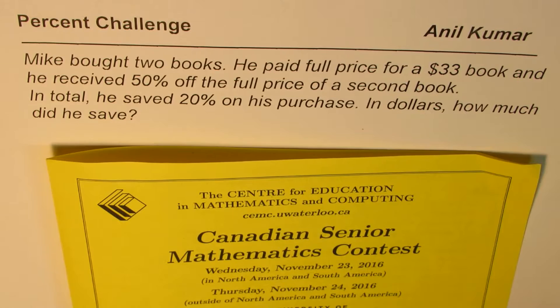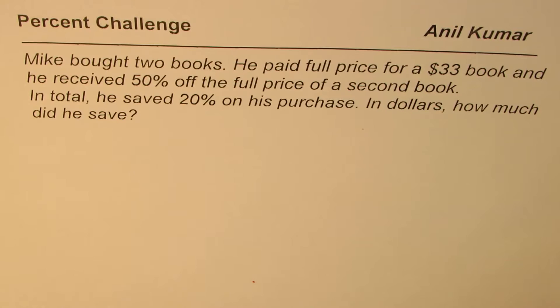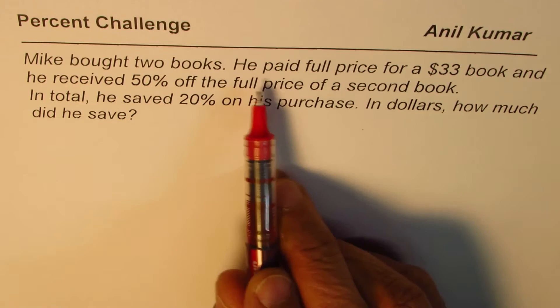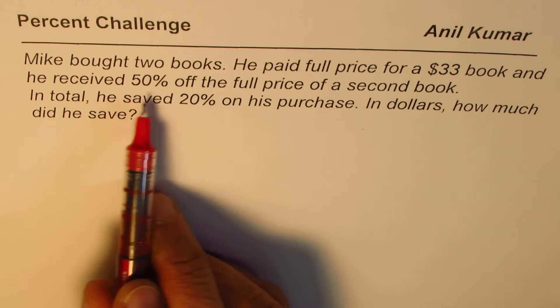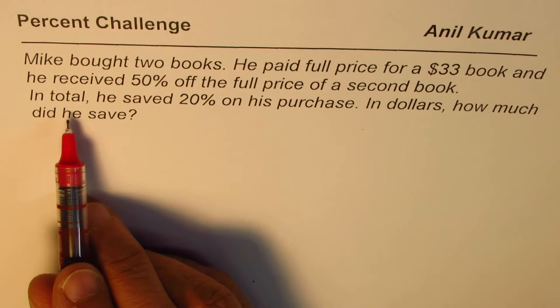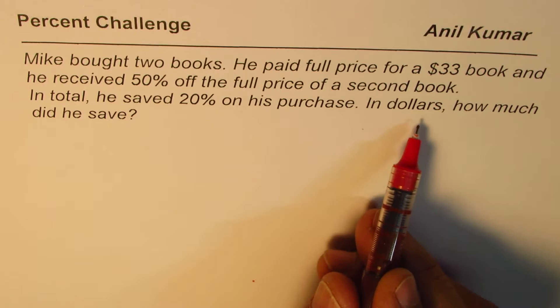Here is a very interesting question which is seen in almost all kinds of competitive exams — it is on percent, a commonly dealt topic which every student may come across. The question is: Mike bought two books. He paid full price for a $33 book and received 50% off the full price of a second book. In total he saved 20% on his purchase. In dollars, how much did he save?